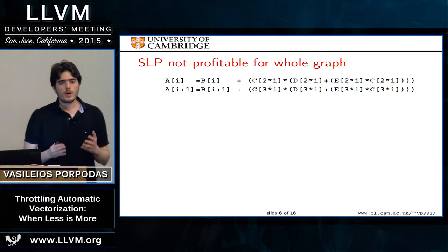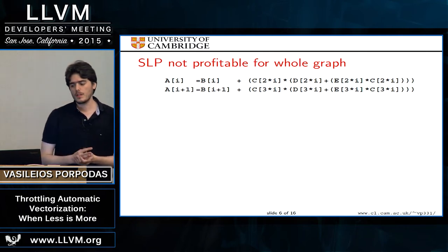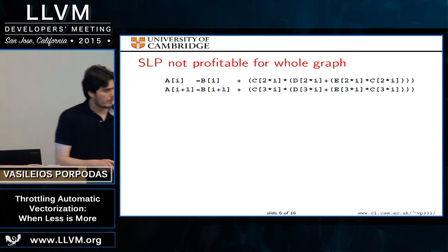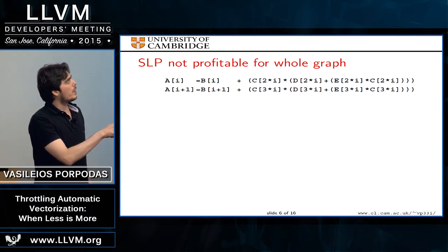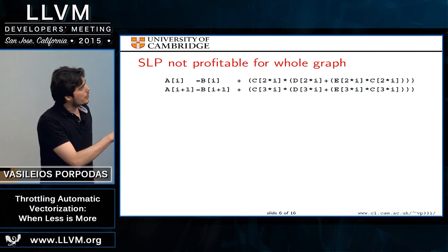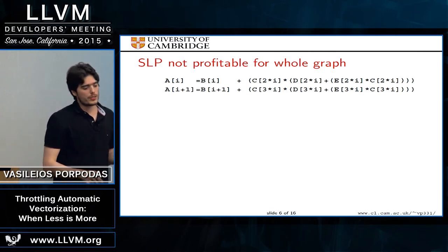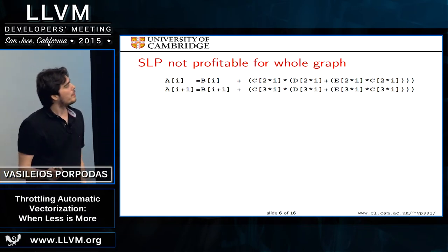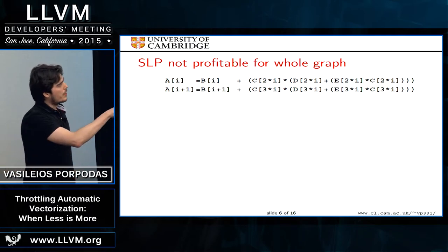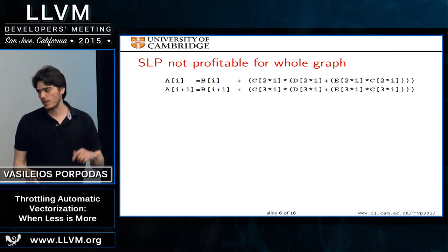To motivate why throttling vectorization helps — why vectorizing less is better — consider this example. The code reads from array B, also from C, D, and E, performs some calculations, and writes results back to A. Importantly, the indexes of C, D, and E are deliberately chosen so that these accesses are not aligned in memory, meaning they will not get vectorized. This is important for the example.